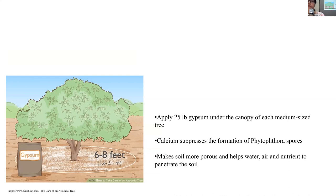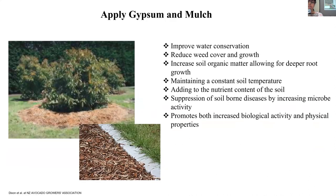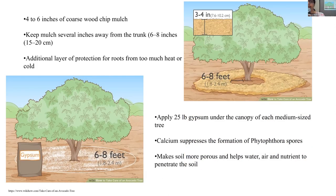Another thing you can do is apply gypsum — calcium sulfate. Apply a thin layer of maybe 20 to 25 pounds under the canopy of each medium-sized tree. It adds calcium to the soil, which is good for growth, removes excess sodium, suppresses the formation of Phytophthora spores, and makes the soil more porous, allowing air, water, and nutrients to penetrate better. After the gypsum, you can apply a layer of mulch — 4 to 6 inches of coarse wood chip mulch — keeping the mulch a little bit away from the base of the trunk. Because avocado roots grow to the surface, mulching also provides protection from too much heat or cold.